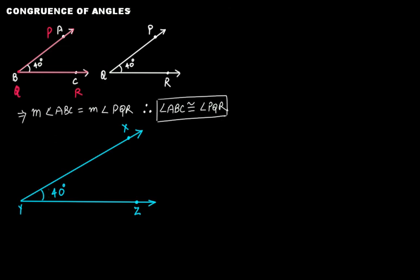Let's take another angle. In this case, angle XYZ is 40 degrees, but its arms are longer. YX is longer than AB and QP, and YZ is longer than BC and QR. So will angle XYZ be congruent to angle ABC and angle PQR?